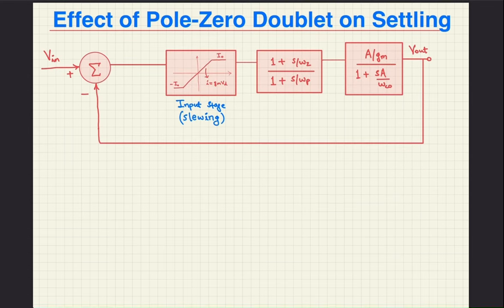The authors considered an open loop amplifier having one zero and two poles. Next, they examined the effect of the pole-zero spacing on the closed loop unity gain step response. To keep the analysis more practical, they even incorporated the effect of slewing in the input stage.